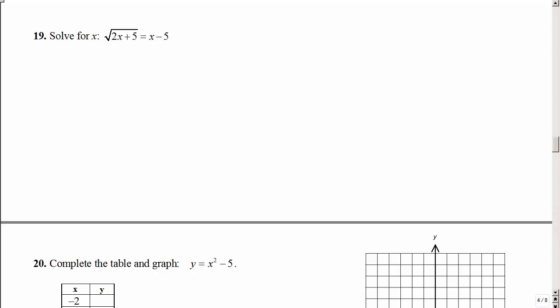On problem number 19, we're solving for x again. We have a square root. This is a radical equation, so you have to think about how am I going to get rid of that square root? Well, we're going to square both sides, so when you square a square root, those are inverse operations, they cancel each other out.